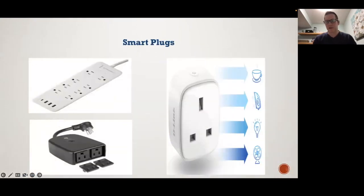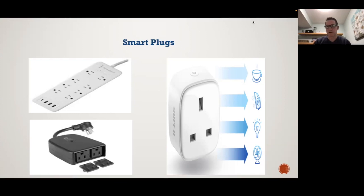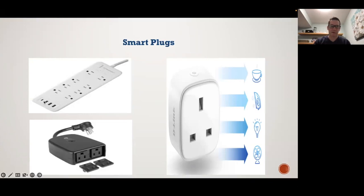Smart plugs are another option, and the benefit is that you can control anything you plug in. Say you had a fan — you can tell Alexa or Google to turn the fan on and off, or use the app. You can also turn on a lamp — maybe you didn't want to buy new light bulbs, so you plug your lamp into it and then you can turn it off because it kills the power. They also have smart power bars where you can control every individual outlet, even the USB plugs.